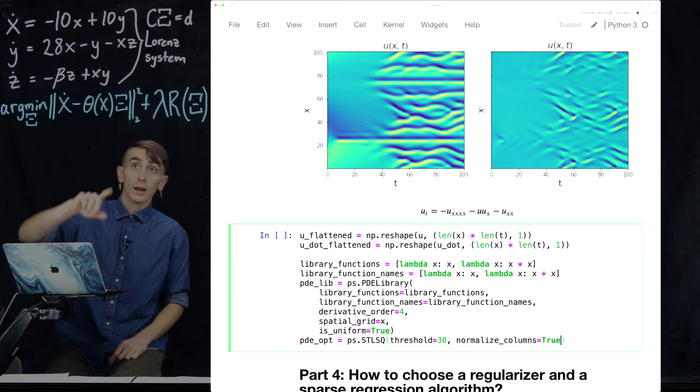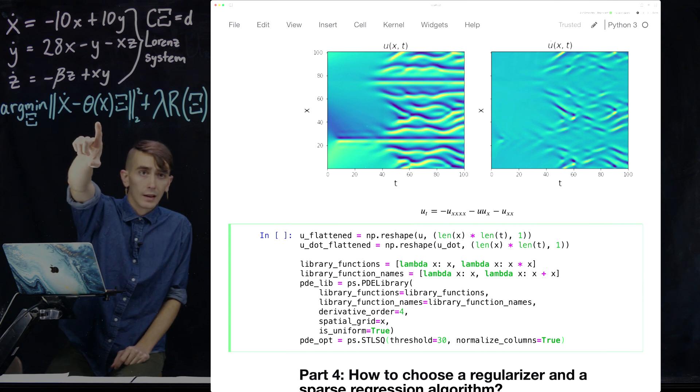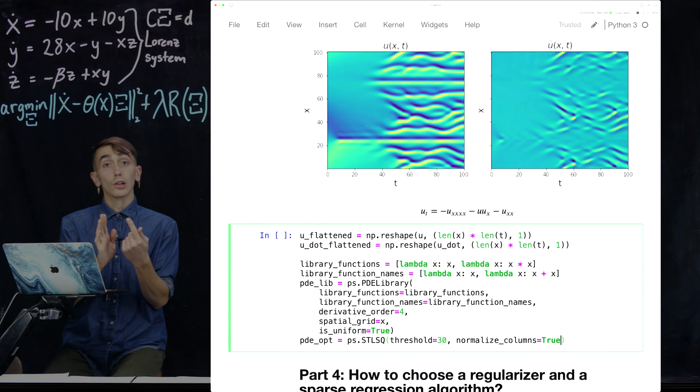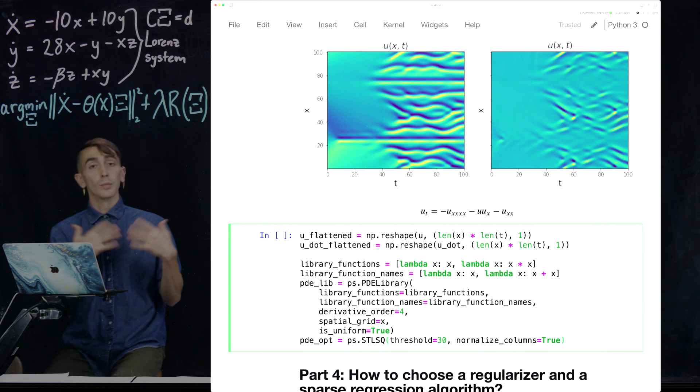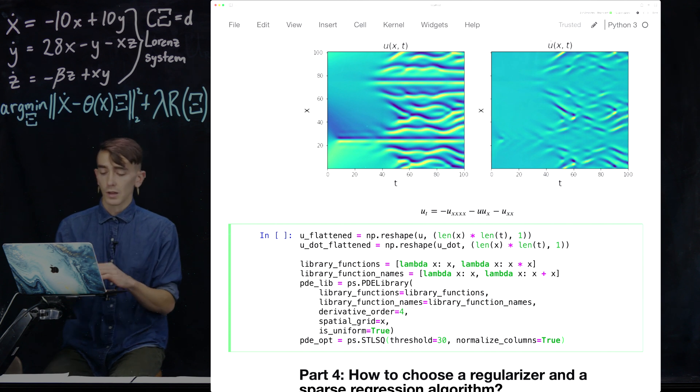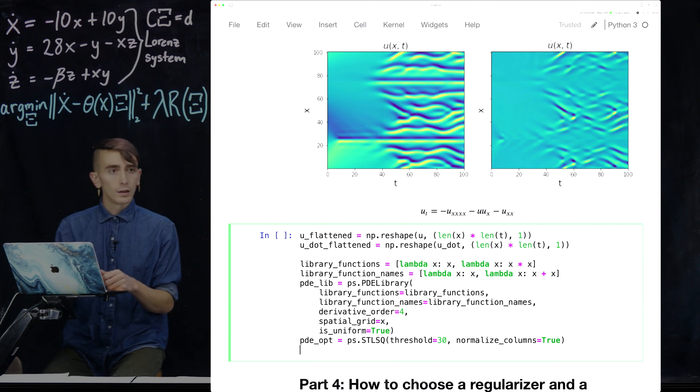And this basically builds this candidate library theta for the PDE. But then it takes each of the columns of theta and normalizes it so that the largest value is equal to 1. And this basically just makes each of the columns in theta similar magnitudes. And this tends to help for many problems, and especially for PDE problems where you might have high order spatial derivatives where otherwise the magnitudes of these columns and theta might be very different. So this sort of normalization really helps the optimization.